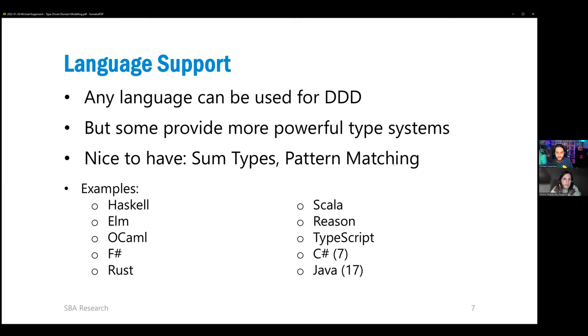The most popular ones on that list are probably TypeScript, C-sharp and Java. TypeScript has sum types, but not pattern matching. C-sharp has pattern matching, but no sum types. And Java 17 has both of them, but these features are very new and probably still unknown to most of you.